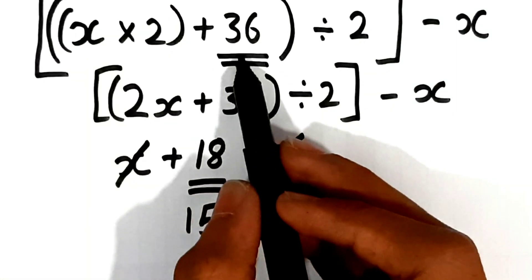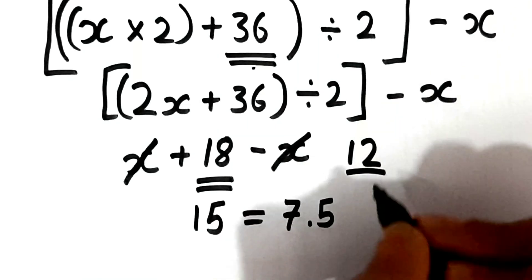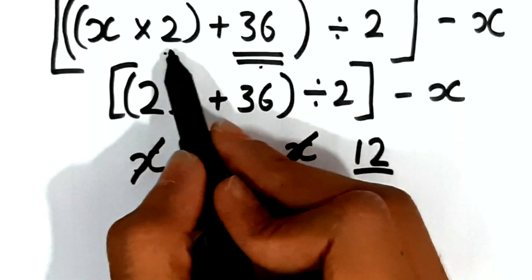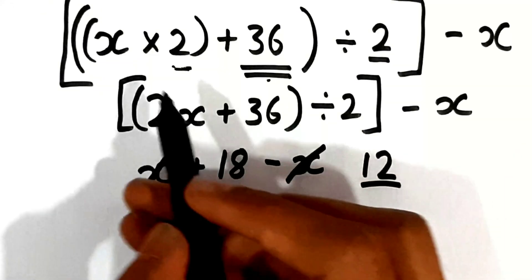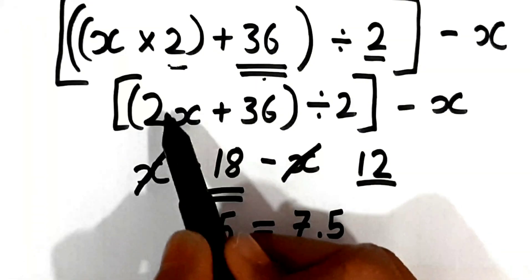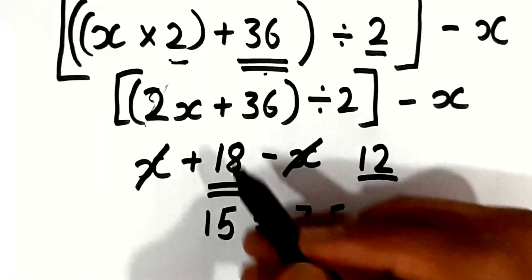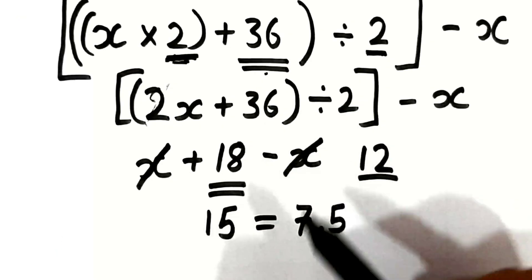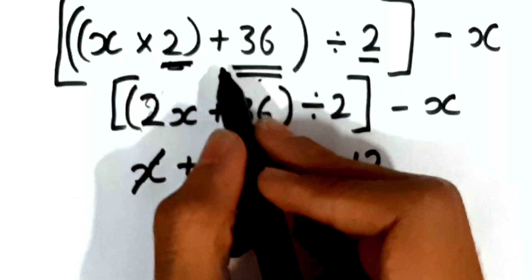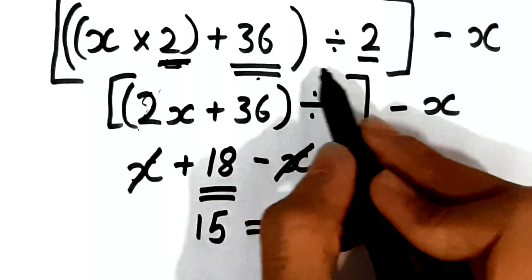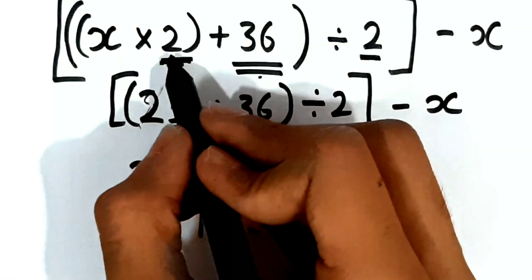Now, if you want the answer to be 12 and you still want to add 36 without changing it, you can change the 2 at both the multiply and divide steps and make it 3 instead. So you'll get 1/3 of the number, and 1/3 of 36 is 12. So it would be 3x plus 36 divided by 3. It depends on what numbers you take — if you multiply by 5, add 25, and divide by 5, you'll get the answer as 5. If you change the multiplier and divisor, you don't need to change the added number.